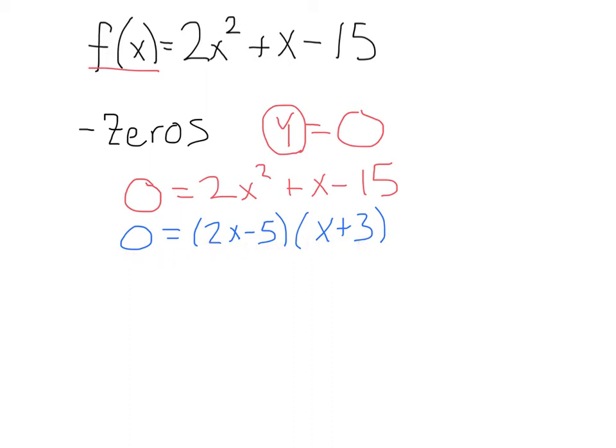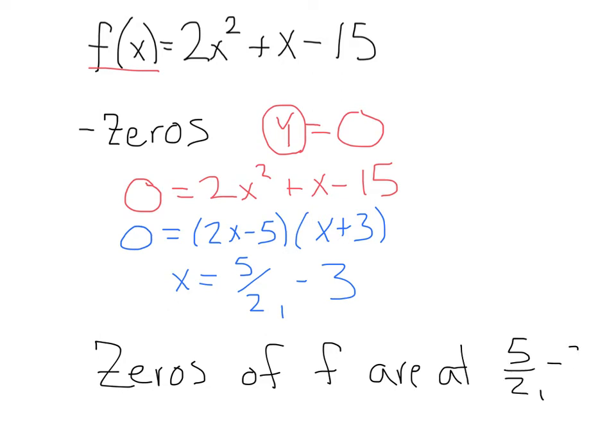Now this is easy to solve. We just solve for each factor and we get our zeros at x = 5/2 and -3. So our zeros of f are at those values: 5/2 and -3.